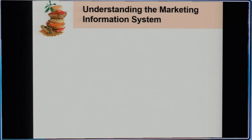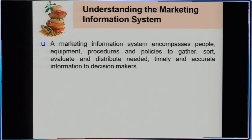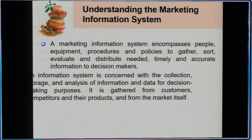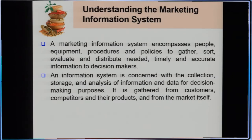For you to understand what a marketing information system is, let us look into the terminology. A marketing information system encompasses people, equipment, procedures, and policies to sort, evaluate, and distribute needed, timely, and accurate information to decision makers. An information system is concerned with the collection, storage, and analysis of information and data for decision-making purposes.